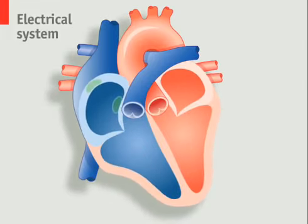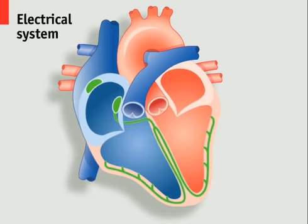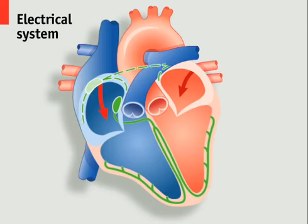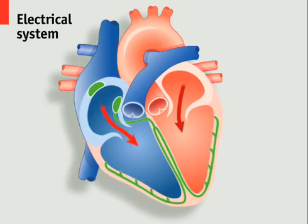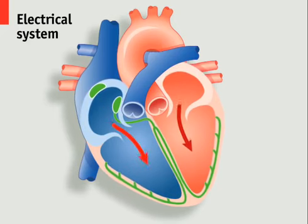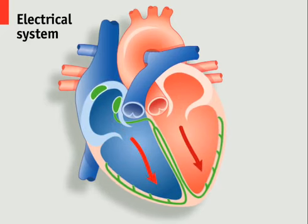The beating of a healthy heart is regulated by electrical impulses. The sequence begins as the atria fill with deoxygenated blood from the body on the right and oxygenated blood from the lungs on the left. An electrical signal from the sinoatrial node then causes the atria to contract, forcing blood into the ventricles.